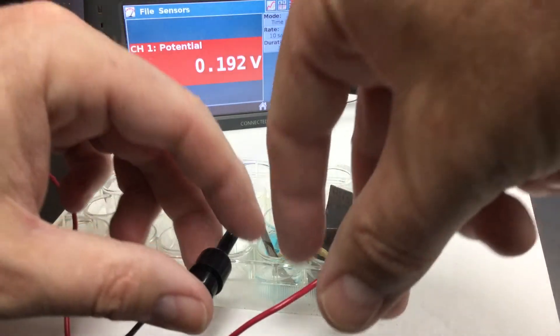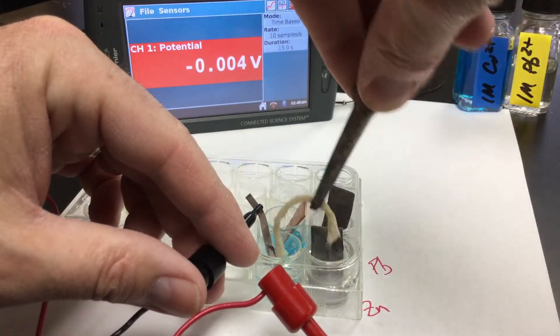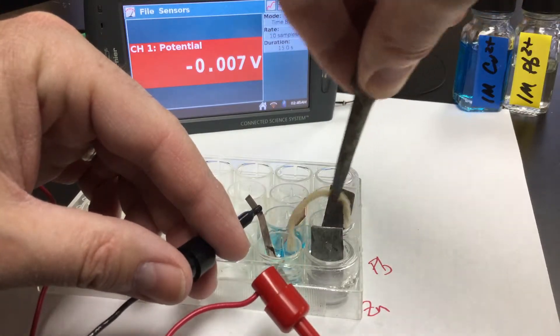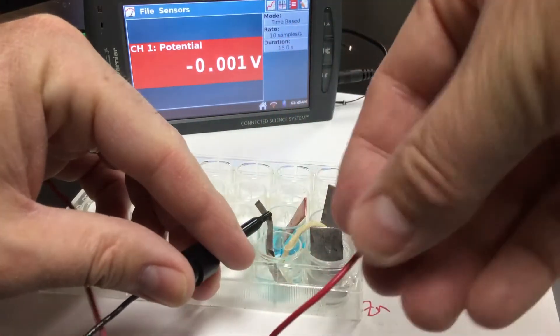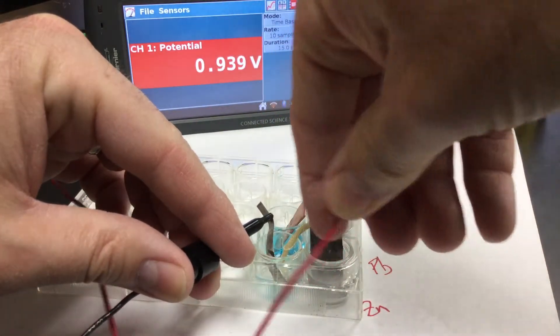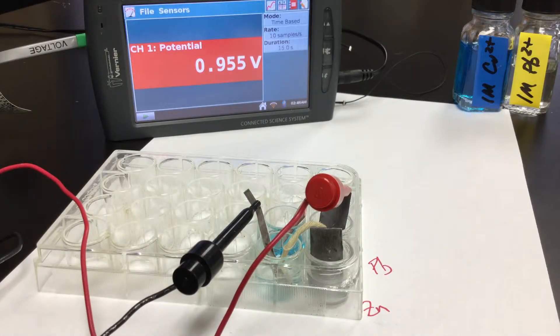Let's do magnesium compared to lead. So we've got magnesium, we're going to compare that to lead now. So right around a volt or so difference there. So we've done magnesium to zinc. Now this is magnesium to lead.